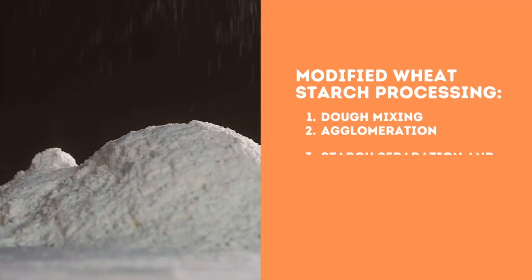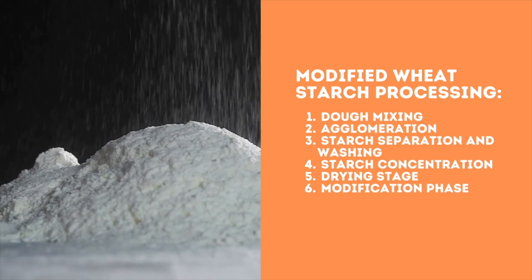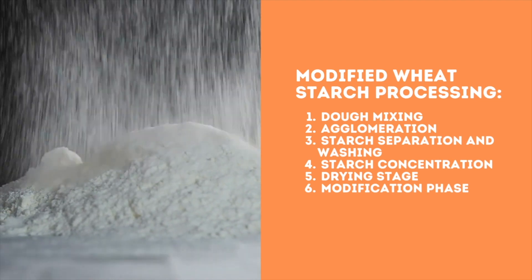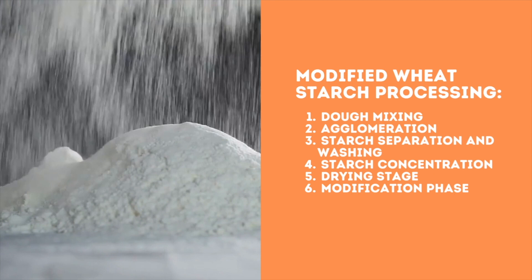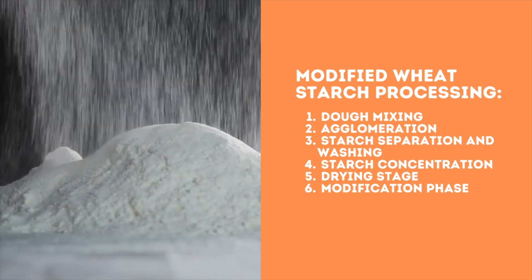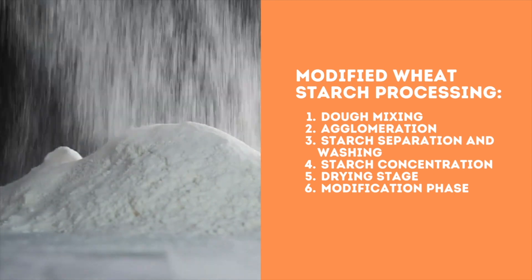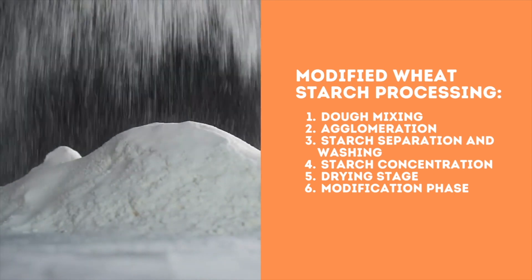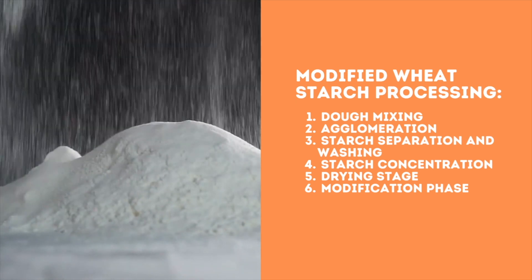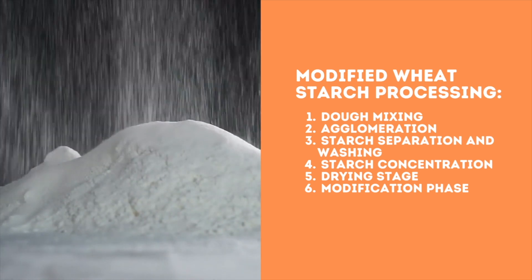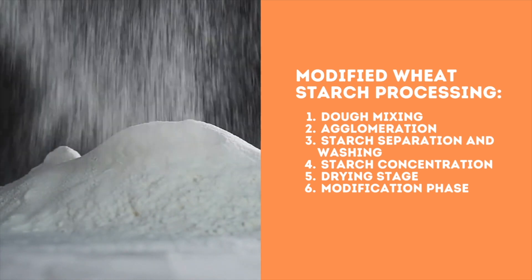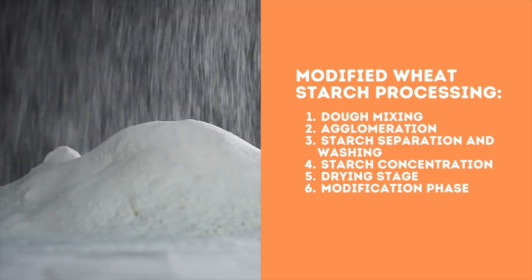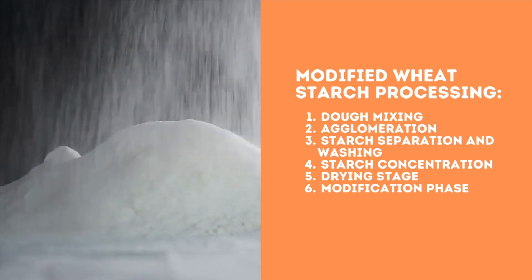Here is how it's produced. Modified wheat starch is produced from wheat flour according to the following steps: first, wheat and water are combined in the dough mixing stage; then comes the gluten agglomeration phase; followed by the starch separation and washing stage; next comes starch concentration; and after that is the drying stage, which results in wheat starch and the beginning of the modification phase.